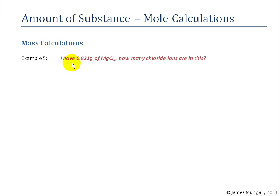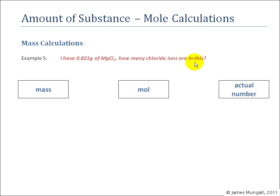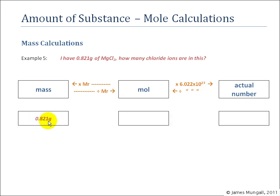And last example, I have 0.821 grams of magnesium chloride. How many chloride ions are in this? So similar calculation, just one thing to watch out for. We've still got our conversions the same. So mass to mole divided by MR, mole to actual number multiplied by the Avogadro constant. So in this case, 0.821 grams of the MgCl2. MR of the MgCl2 is 95.218. That came from taking the magnesium, which is about 24 and then adding two of the chlorines, which is about 35.5. So that's where that MR comes from.